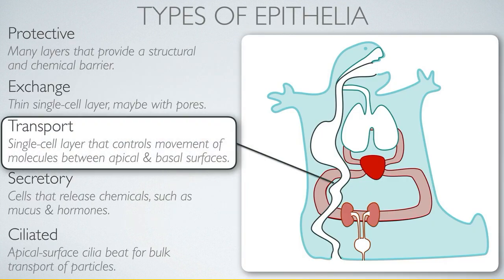Transport epithelia are a single-celled layer that controls the movement of molecules, and in particular in this case is absorbing glucose from the gut lumen — that is, the interior of the gut.